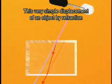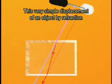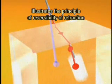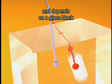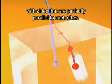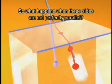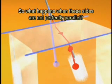This very simple displacement of an object by refraction illustrates the principle of reversibility of refraction, and depends on a glass block with sides that are perfectly parallel to each other. So, what happens when these sides are not perfectly parallel?